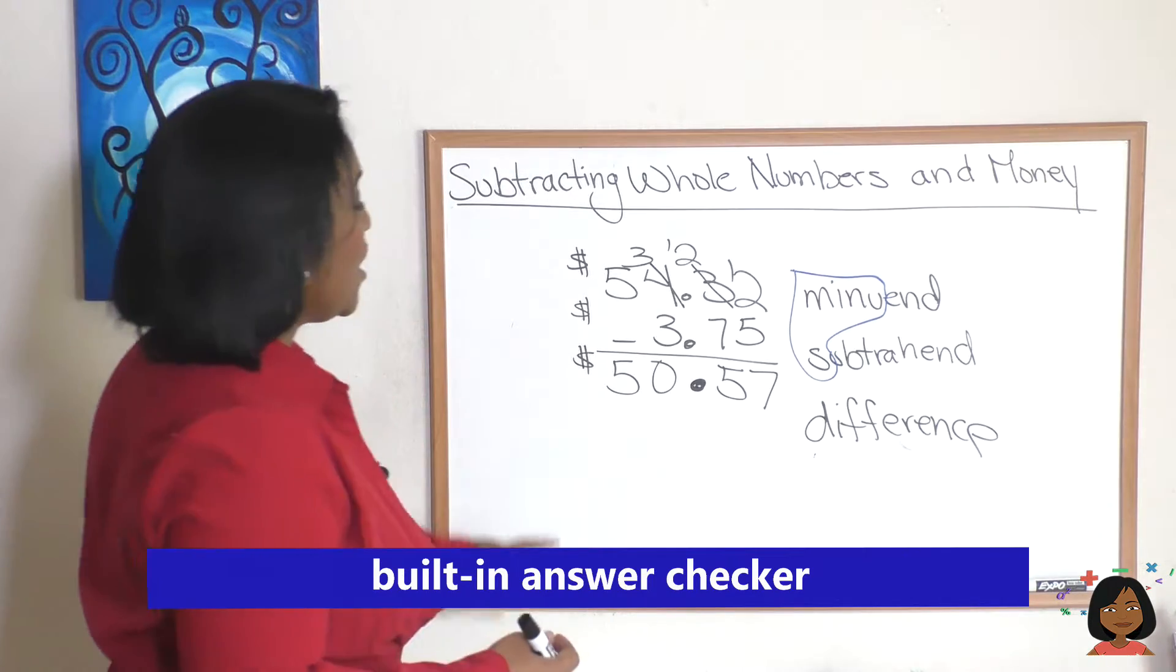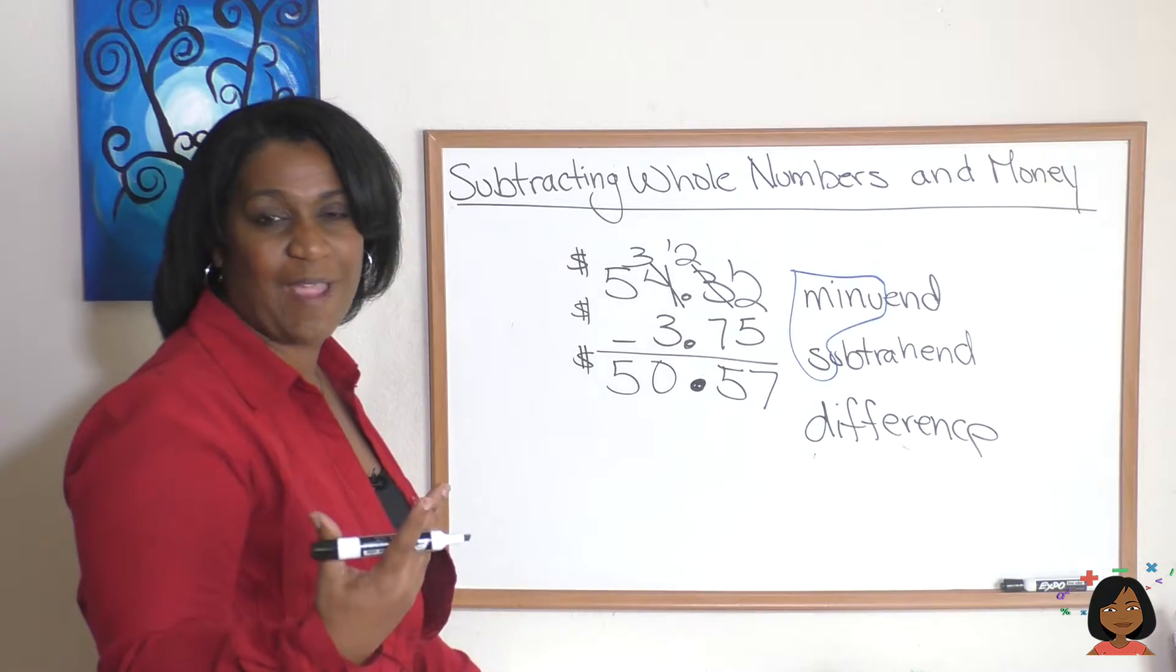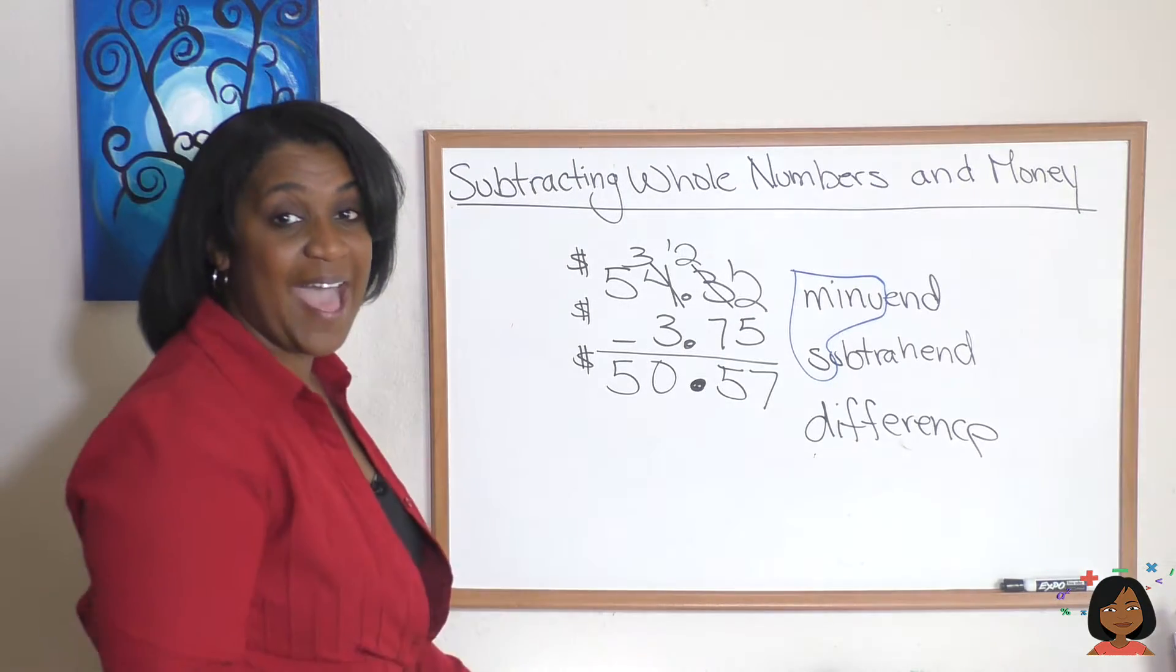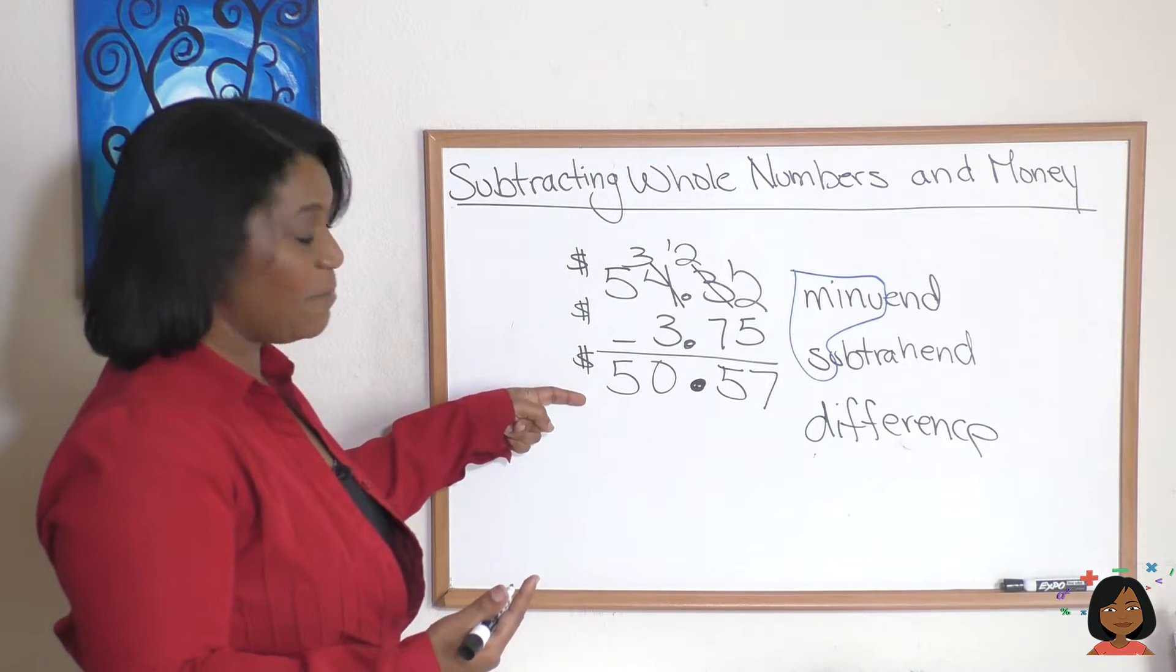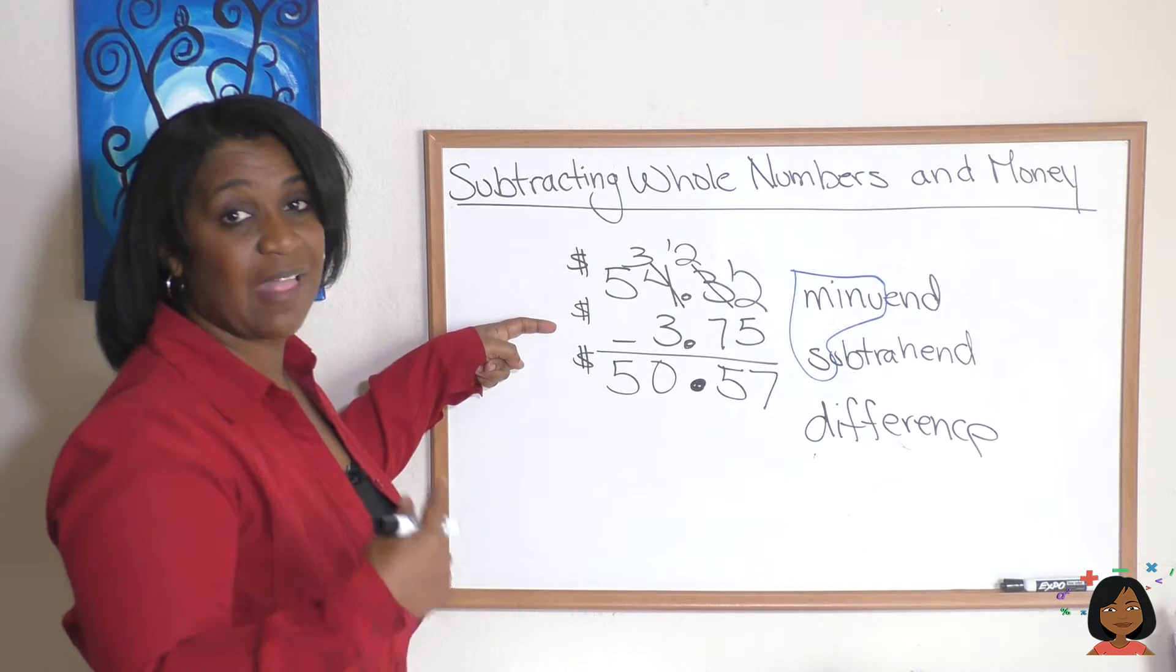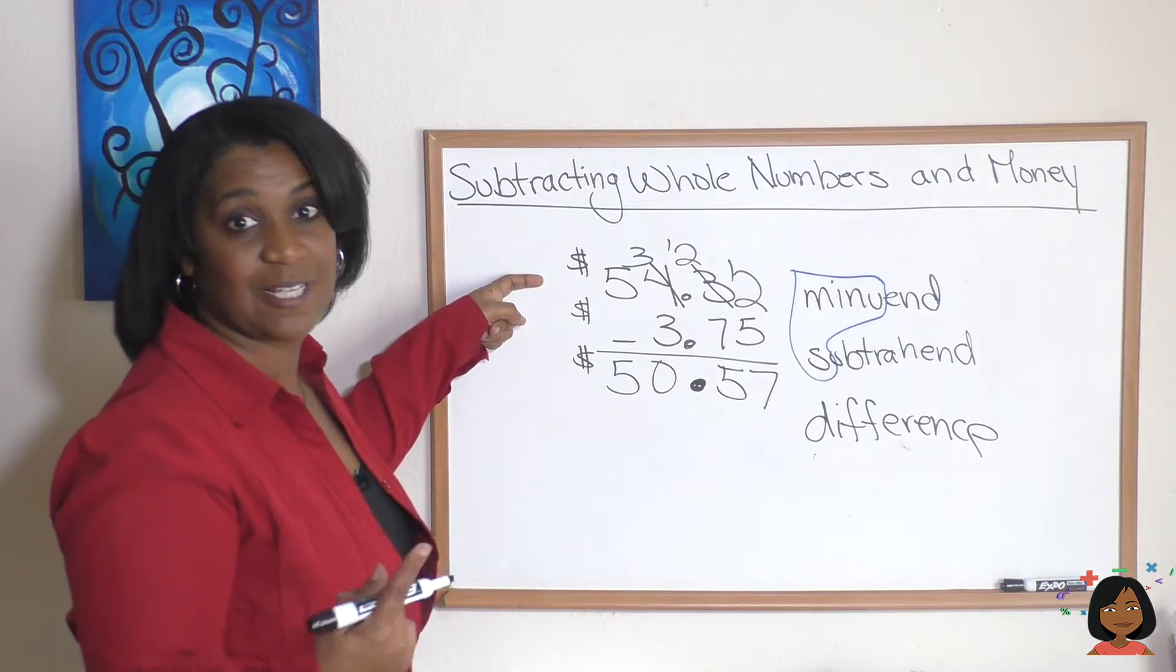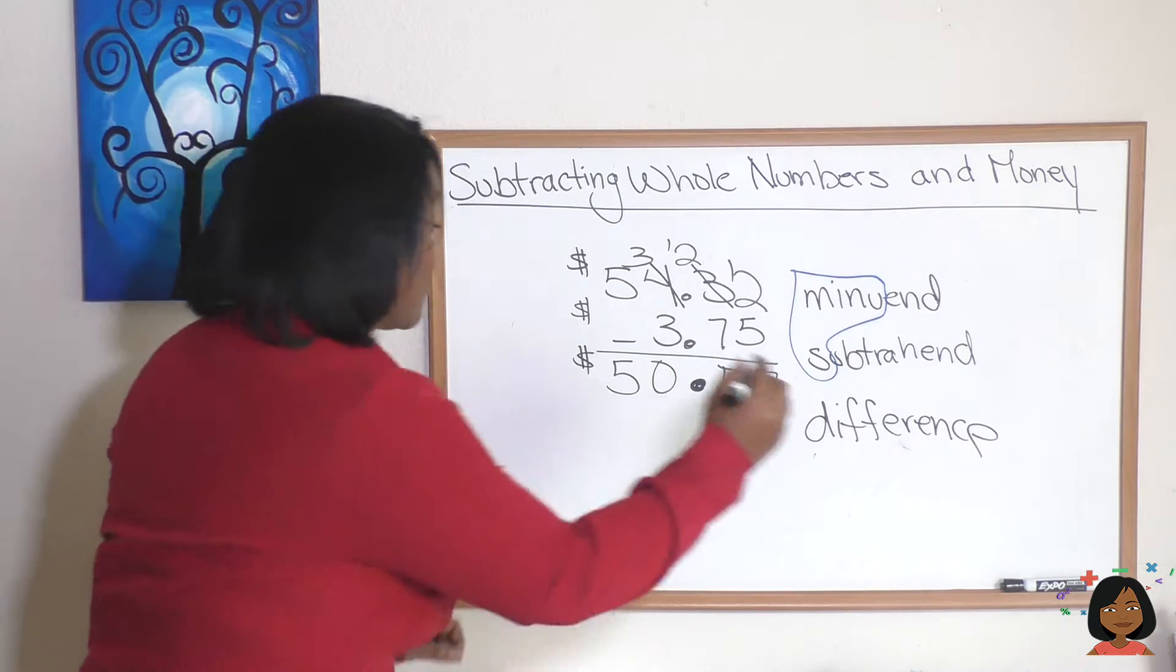So we subtracted, but if I want to know that my answer is correct I can do something called adding up. If I start at the bottom, fifty point fifty seven, and I add three dollars and seventy five cents to it, it should equal fifty four thirty two. Let's see if it works.